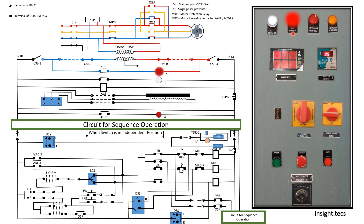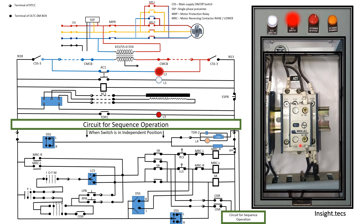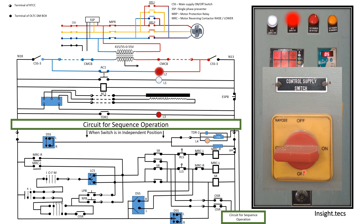Inside the RTCC panel, as the power moves further, the AC1 contact is closed and lamp L2 will be glowing — L2 indicates that the supply of the OLTC is switched off. To turn on the supply for the OLTC, there is a provision of the CSS3 switch. AC1 is a contactor placed on the back side of the RTCC panel that checks whether the power supply for the OLTC is okay.